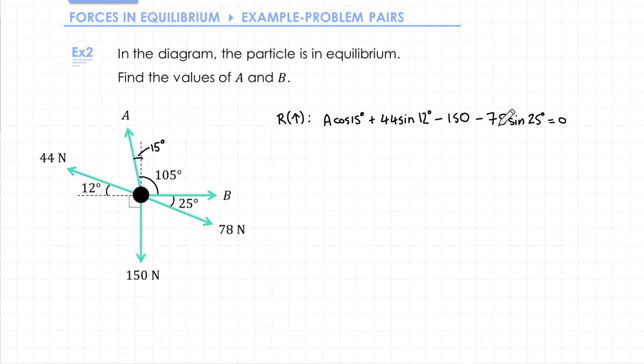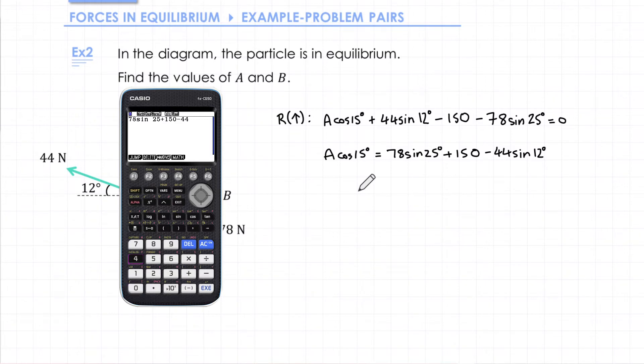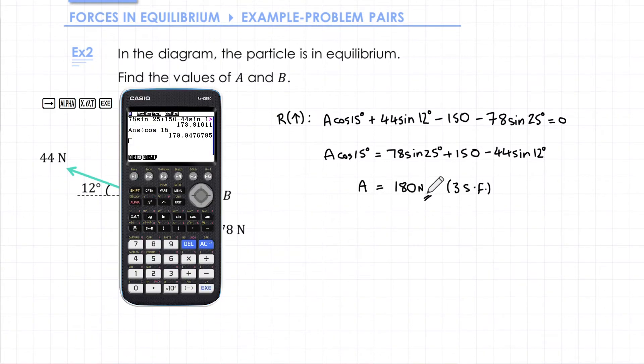We can rearrange this in as many steps as we want. I'm going to leave A cos 15 on the left hand side and move all the other terms onto the other side. And then next I'm going to divide by cos 15. However to save me having to write out the whole calculation again I'll simply type this into my calculator and then divide it by cos 15. If I do that I get 180 newtons to three significant figures. However as I'm going to use my answer for A in order to find force B it's important to make sure I store the exact value from this part in my calculator to avoid rounding errors.